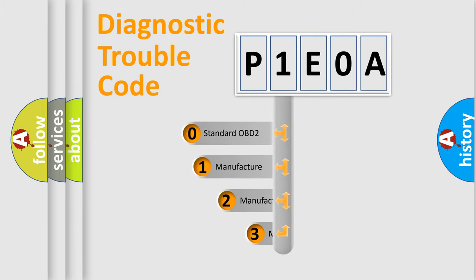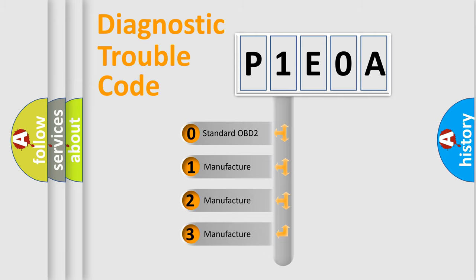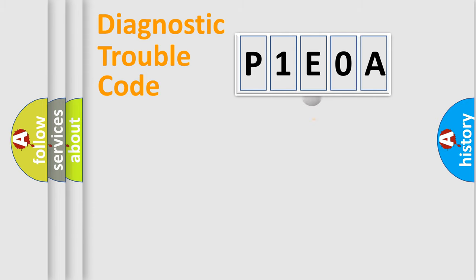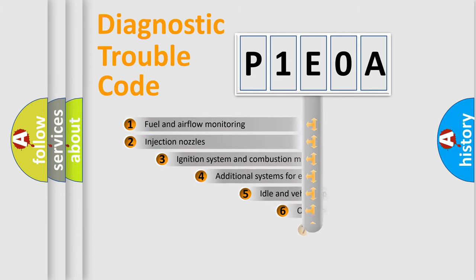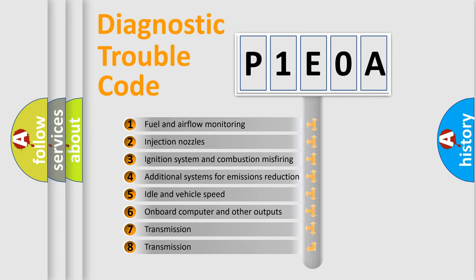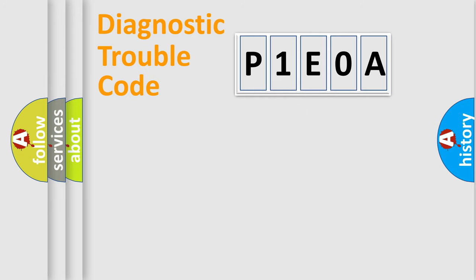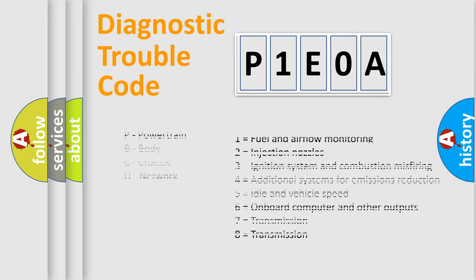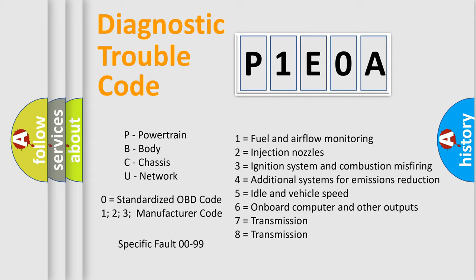If the second character is expressed as zero, it is a standardized error. In the case of numbers 1, 2, 3, it is a manufacturer-specific expression of the car error. The third character specifies a subset of errors. The distribution shown is valid only for the standardized DTC code. Only the last two characters define the specific fault of the group. Let's not forget that such a division is valid only if the second character code is expressed by the number zero.